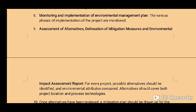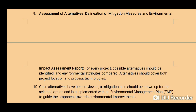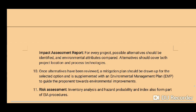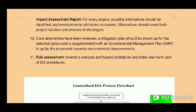Step eight involves monitoring and implementation of the Environmental Management Plan — the various phases of implementation of the project are monitored. Step nine is assessment of alternatives and delineation of mitigation measures — for every project, possible alternatives should be identified and environmental attributes compared. Alternatives should cover both project location and project process technologies.